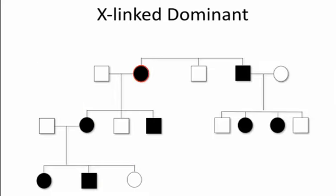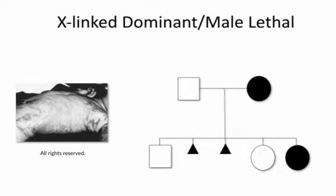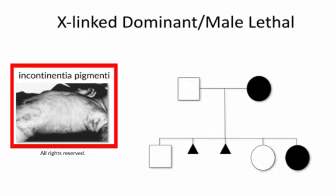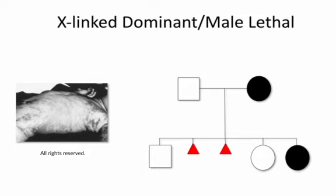One can have X-linked dominant traits, where both males and females are affected. A female transmits, on average, to half of her offspring, and a male to all of his daughters but to none of his sons. A special case is X-linked dominant with male lethality, depicted here by incontinentia pigmenti — a condition that causes streaky areas of hyperpigmentation on the skin, neurologic problems, dental problems, and problems with vision. This is an X-linked trait lethal in the hemizygous state of a male carrying that mutation on his X. Females can survive with this trait because they are heterozygous, which ameliorates the phenotype. They transmit it to half their offspring; if those offspring are male, they tend to die in utero and miscarry, whereas if transmitted to a daughter, she'll manifest the phenotype.